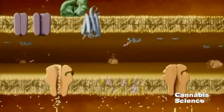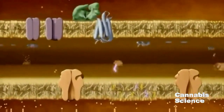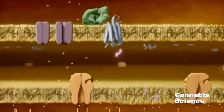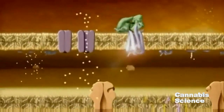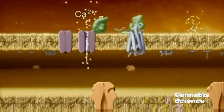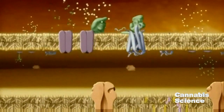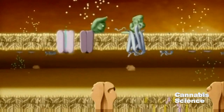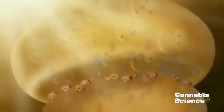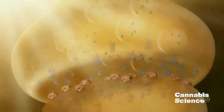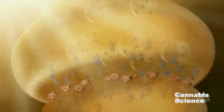This calcium buildup causes the synthesis and release of endocannabinoids from membrane lipids. Diffusing across the synaptic cleft, the endocannabinoids bind to the CB1 receptor, activating the G-protein. Activation influences ion flow, resulting in suppression of pre-synaptic neurotransmitter release. Endocannabinoids are subsequently taken back into the cell and enzymatically degraded.